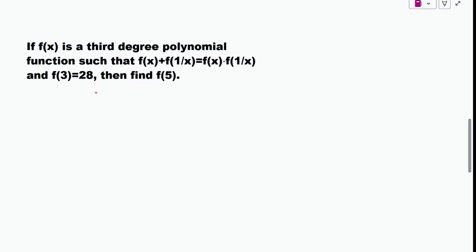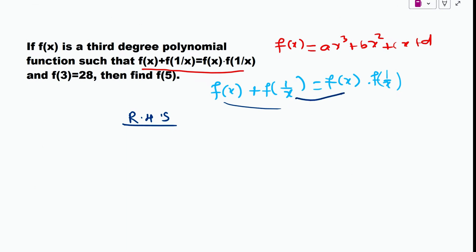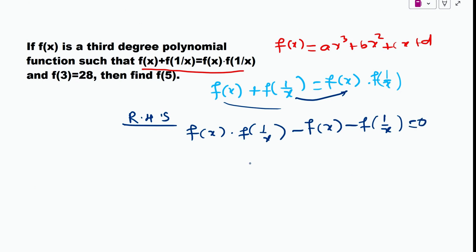This next question is very important. We have been given that f(x) is a third-degree polynomial, which could be of the form ax³ + bx² + cx + d. The relation given is f(x) + f(1/x) = f(x)·f(1/x). Let me first try to solve this relation by taking everything to the right-hand side: f(x)·f(1/x) − f(x) − f(1/x) = 0.